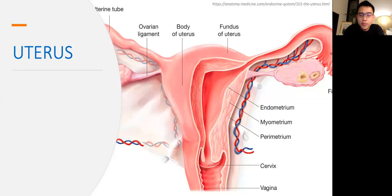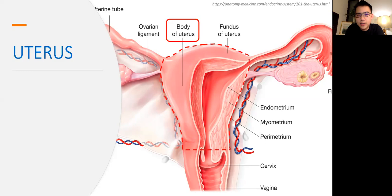The uterus is a hollow organ, the bulk of which comprises the body of the uterus. It's connected on either side via the fallopian tubes to the ovaries. The uppermost aspect of the uterus is called its fundus, and at the lower end of the uterus is the cervix, which connects the uterus to the rest of the vagina.